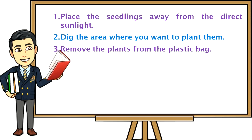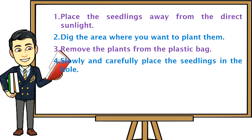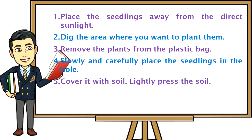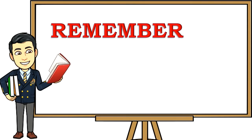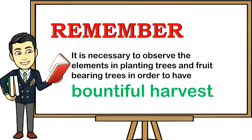Three, remove the plants from the plastic bag without removing the soil that holds the roots. Four, slowly and carefully place the seedlings in the hole, making sure the main roots are not bent. Five, cover with soil and lightly press. Six, water the new plant early the next morning using a water sprinkler, making sure to water the soil surrounding the plant. Remember, it is necessary to observe the elements in planting trees and fruit-bearing trees in order to have a bountiful harvest.